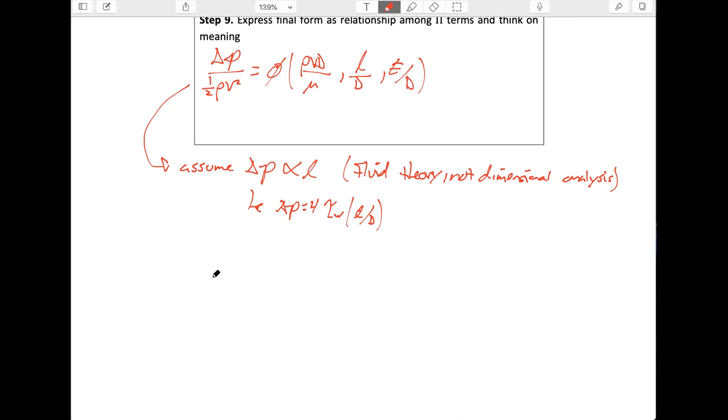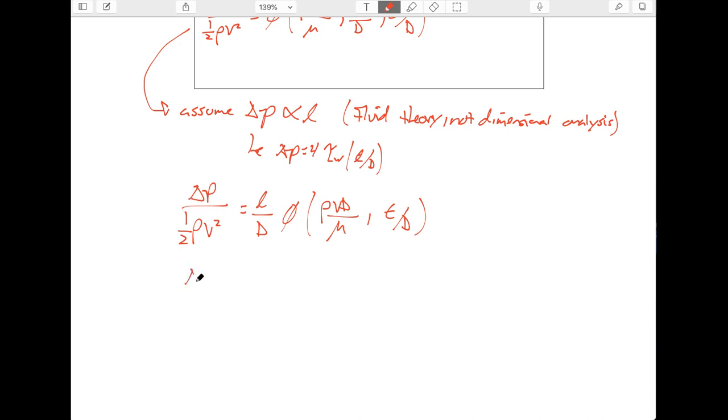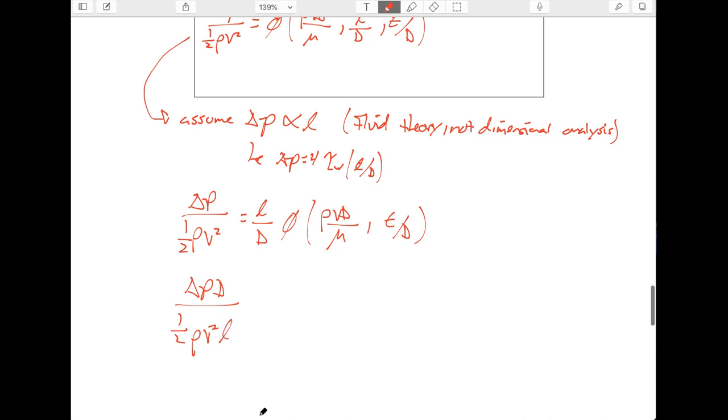And what that means is we know if it's proportional, we can just yank this right out of the function, because it's a function times a constant. And so, we could write this as delta P over one half rho V squared is now equal to L over D times some new function phi. We can call it phi prime if you like. I don't like that, because you might think it's a derivative. Let's just leave it alone. Rho V D over mu epsilon over D. That's neat, because now I can just slap these onto the other side of the equation as delta P D over one half rho V squared L. And that now is some function of rho V D over mu and epsilon over D. And this might look familiar.